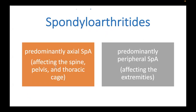Always take note that the spondyloarthritides can be divided into two big groups: predominantly axial spondyloarthritides and predominantly peripheral spondyloarthritides. The classification is based on which part of the musculoskeletal system is involved. Axial means it affects the spine, the thoracic cage, and the pelvis. Peripheral classically affects the extremities.